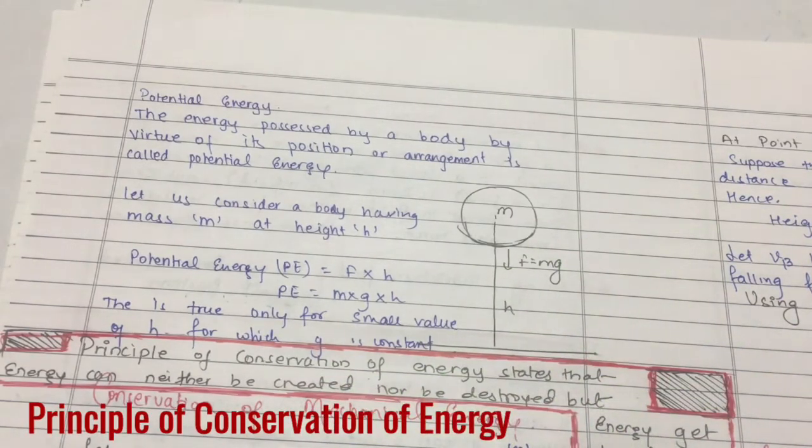Let us find the definition of principle of conservation of energy. What is the principle of conservation of energy? It says that energy can neither be created nor be destroyed, but energy can transform from one form to the other.